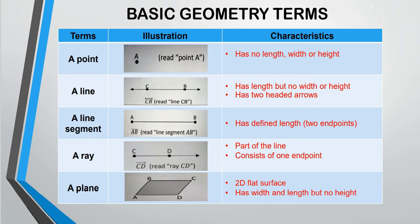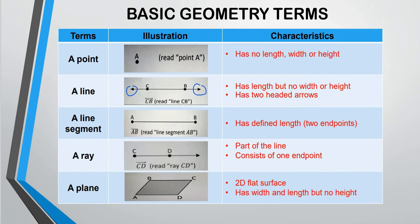And then we have a line. CB, arrow above CB. Read line CB. Has length but no width or height. Has two headed arrows. Yeah, we have two headed arrows. So we call that a line.